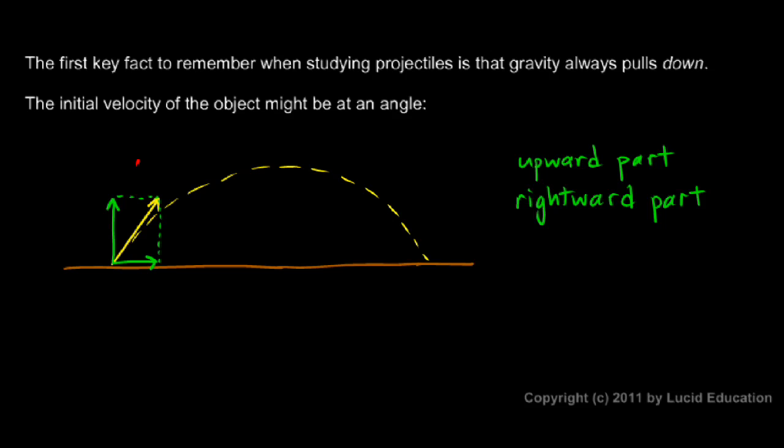This vector is up and to the right, and this little vector shows how much up it goes and that vector shows how much to the right it goes. The upward part and rightward part are referred to as the horizontal and vertical components.